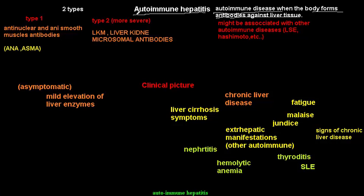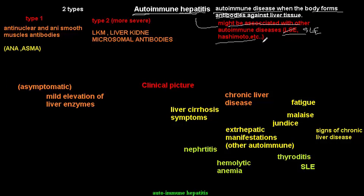Almost always you find concordance between autoimmune diseases, so autoimmune hepatitis may be associated with other autoimmune diseases like SLE, Hashimoto's thyroiditis, and other autoimmune diseases.